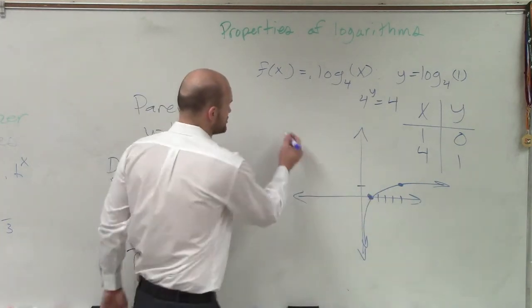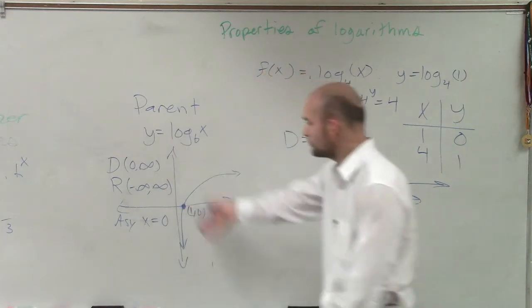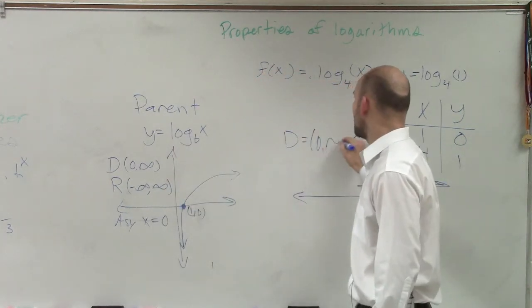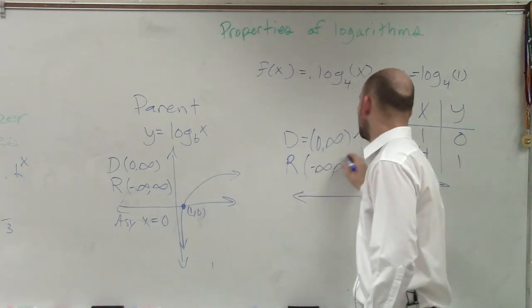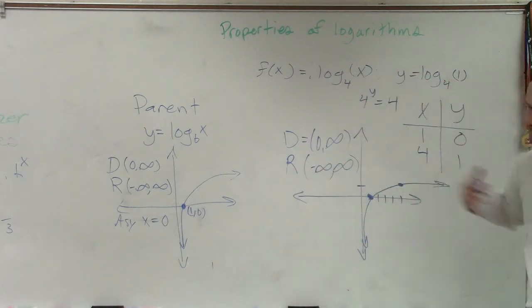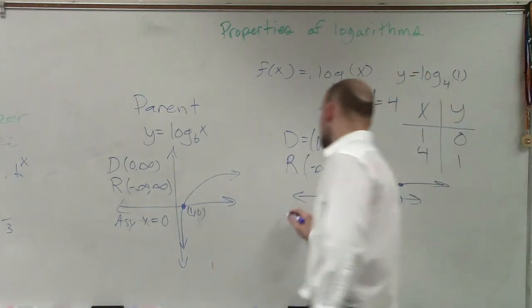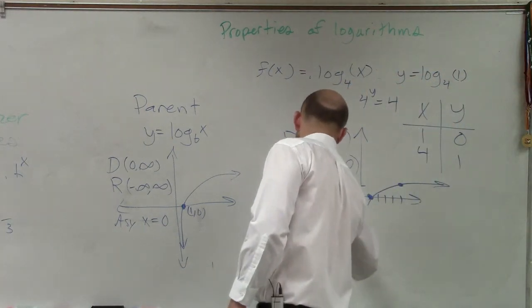So now there's no transformations. So our domain is going to be the same as the original parent graph. 0 comma infinity. The range is going to be negative infinity to infinity. The asymptote did not change. We didn't shift the graph left or right. So the asymptote is x equals 0.